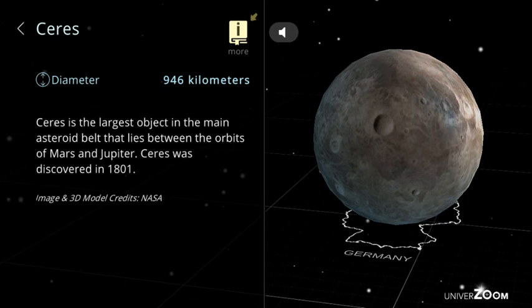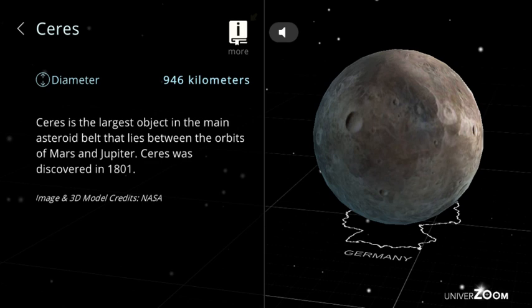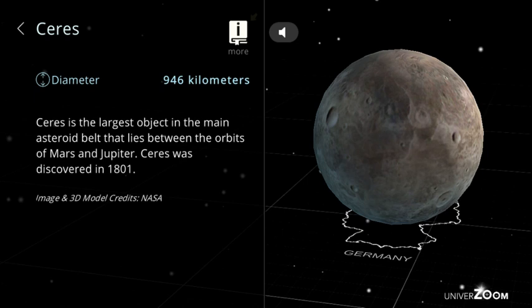Ceres, diameter: 939 kilometers. Ceres is the large object in the main asteroid belt that lies between the orbits of Mars and Jupiter. Ceres was discovered in 1801.